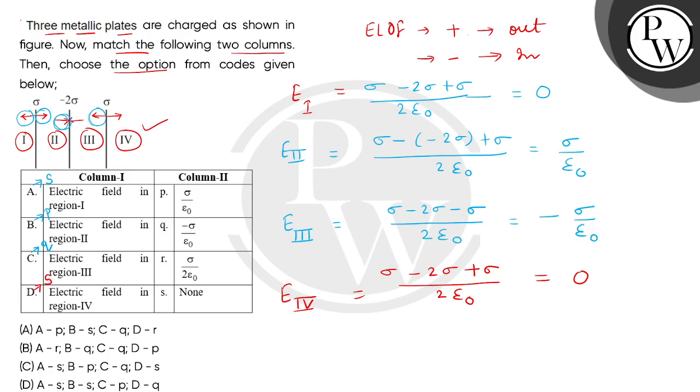So children, we can see that the sequence is S, P, Q, S. So correct answer is option number C. Thank you.